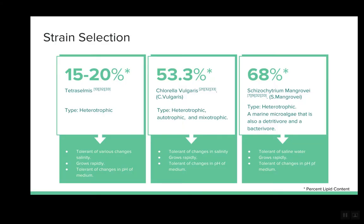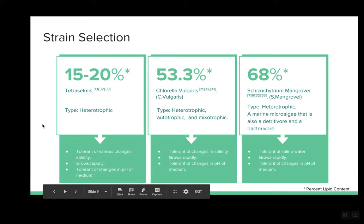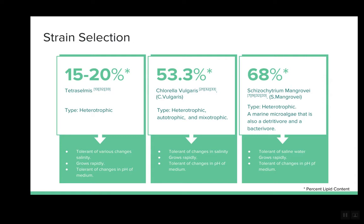The first design parameter is the microalgae strain. After combing through a plethora of microalgae strains, we've narrowed our choices down to three strains. These strains were chosen based on their lipid content, growth rate, and robustness. These factors were important as they determined our plant's productivity, our economic analysis, as well as the nutrient and environment requirements.